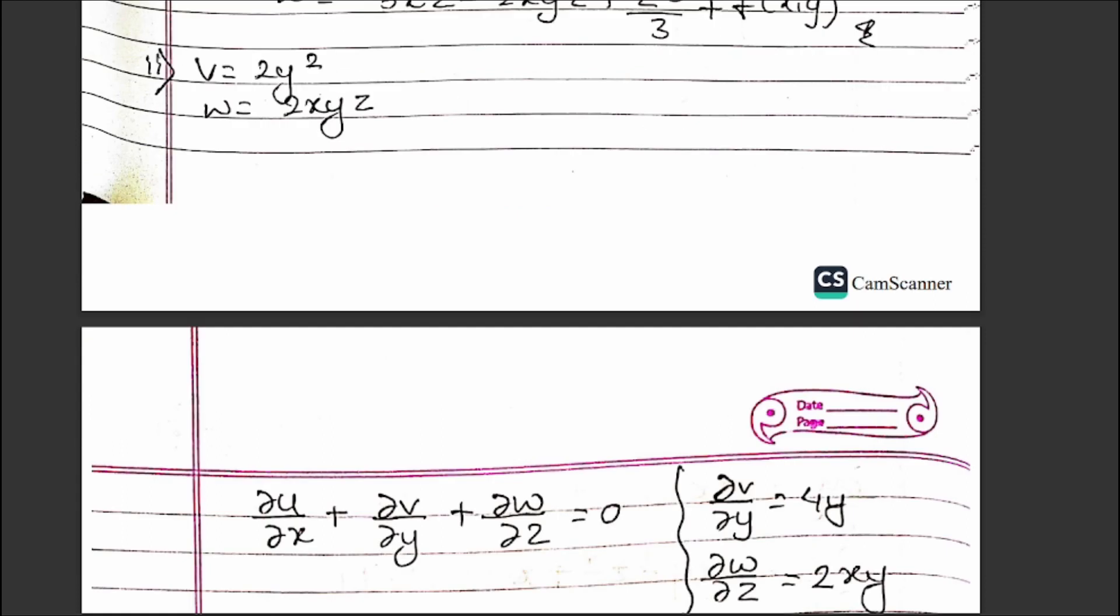Next case: u = 2y², w = 2xyz. We need to find v using the continuity equation ∂u/∂x + ∂v/∂y + ∂w/∂z = 0.